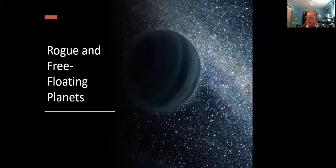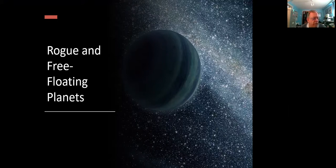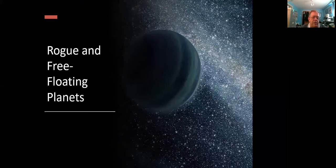Rogue and free-floating planets. If nature finds it very easy to form lots of these brown dwarfs and we're finding more and more of them the more we look, then surely it must be able to make smaller objects more easily again.